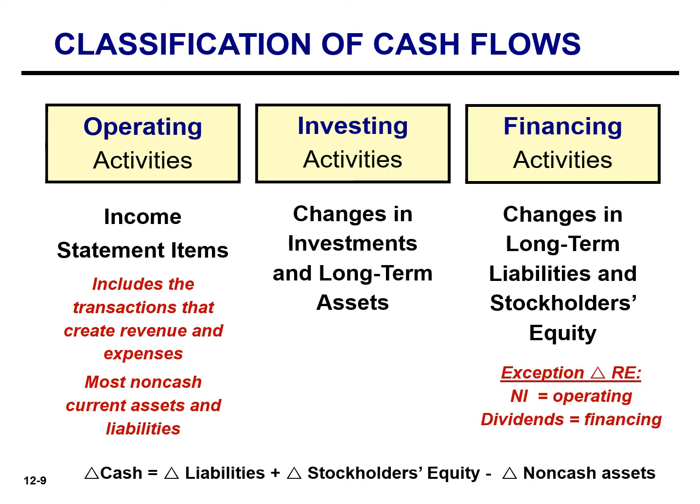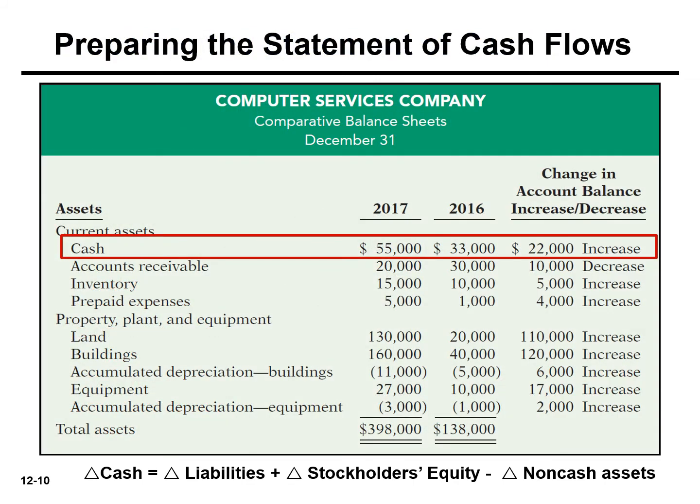The exception is retained earnings. Retained earnings increases for net income but is reduced for any dividends. Net income is considered an operating activity, whereas dividends is considered a financing activity. So when you look at the balance sheet, rather than think of each line item as an asset, a liability, or stockholders' equity, think of them as an operating, investing, or financing activity.